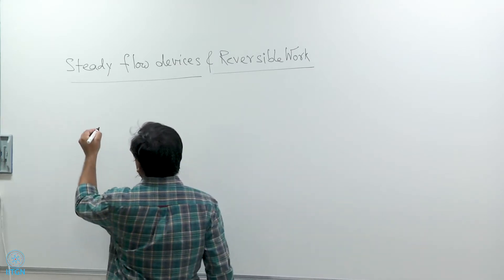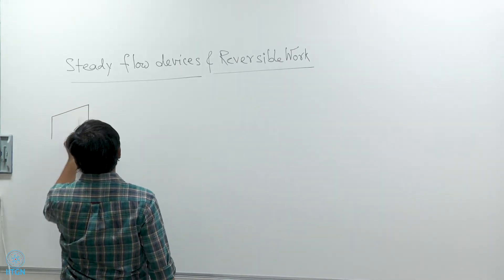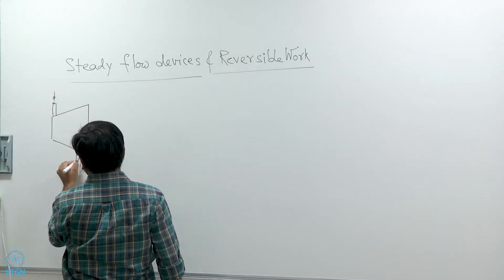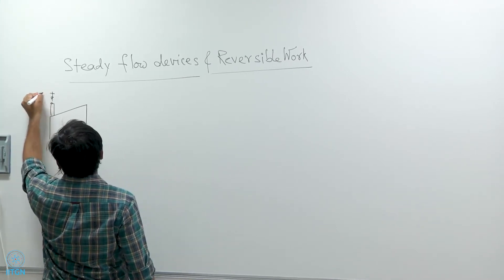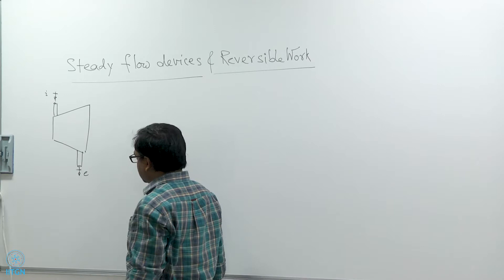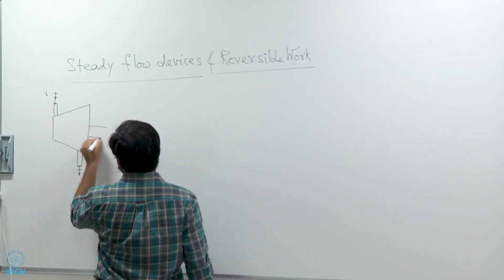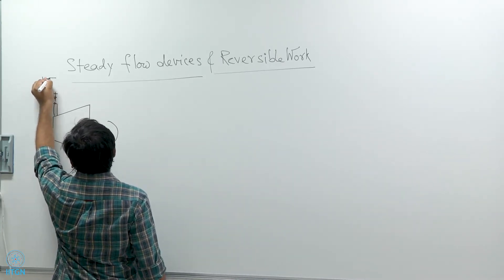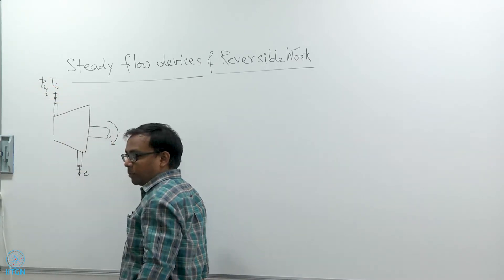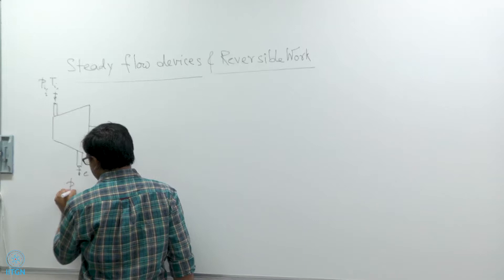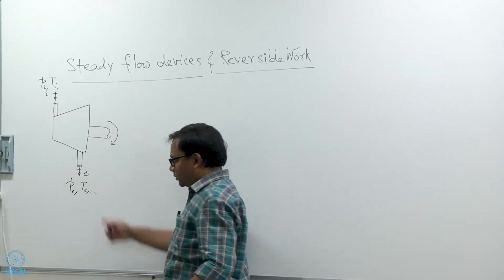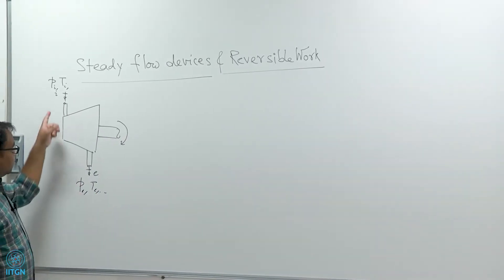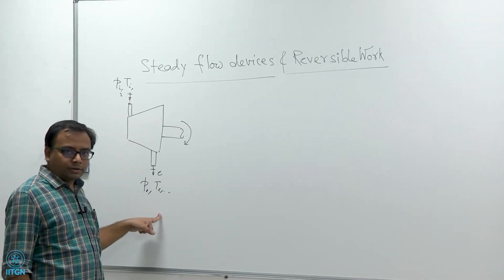As an example we can talk about a turbine with one inlet and one outlet. Let's say this is inlet I and I denote the outlet with E — exit with E — and this turbine gives some work output. At the inlet I might know the temperature, pressure, and other state properties. Similarly, at the exit I might know pressure, temperature, and other state properties. What we want to do is see what is the consequence of applying the second law to this device.